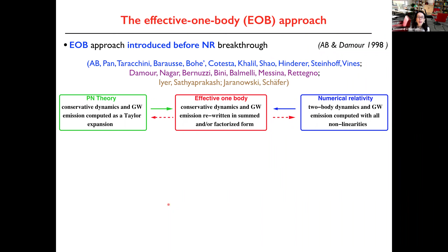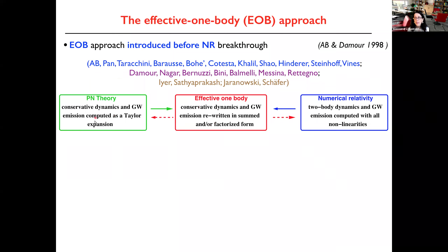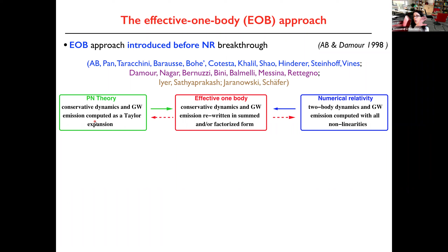Let me introduce this approach, which was introduced before the numerical relativity breakthrough that I will also describe briefly. Over time, many people have participated to improve these models from theoretical and data analysis points of view. At high level, this approach builds on post-Newtonian theory — particularly the post-Newtonian Hamiltonian and the waveform computed in PN theory. But it's not just using post-Newtonian theory as it is: as I showed last time, when you approach merger, depending on how you write your waveform or binding energy, you can have different answers from different approximants.